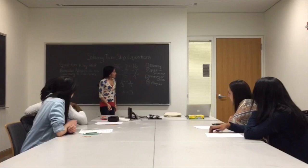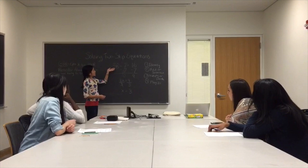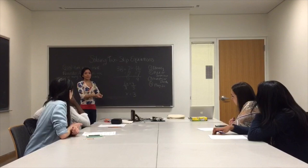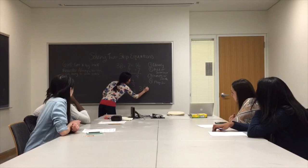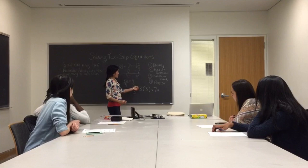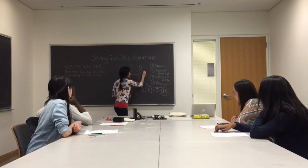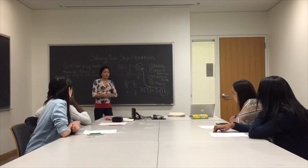Now that we have solved for x, we look at our fourth step, which is to plug in for x. We look back at our original equation: 3x plus 7 equals 16. Mariah, what are we going to plug in for x? 3. Yes, because that is what we got for x. So now we have 3 times 3, instead of x, plus 7. 3 times 3 is 9, plus 7 is 16. Since this 16 matches this 16, we know that we have solved the equation correctly.